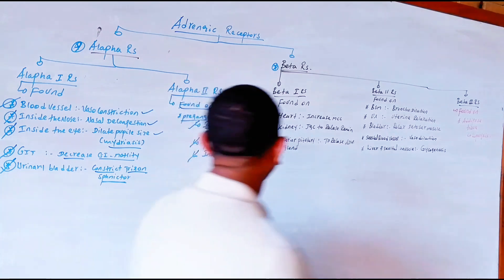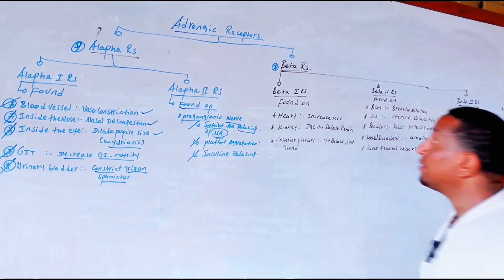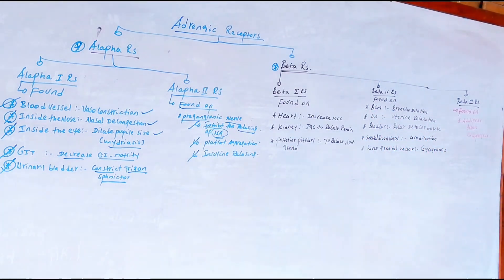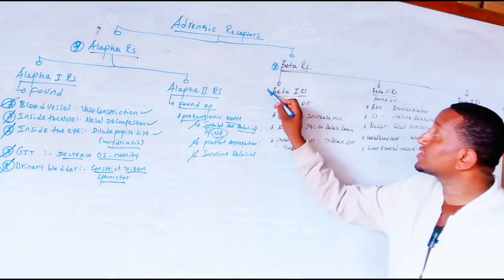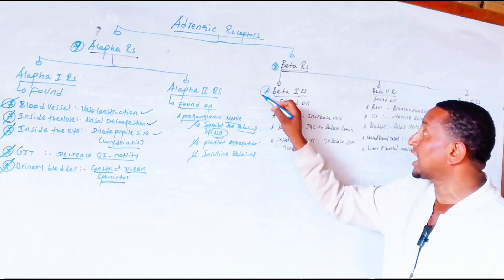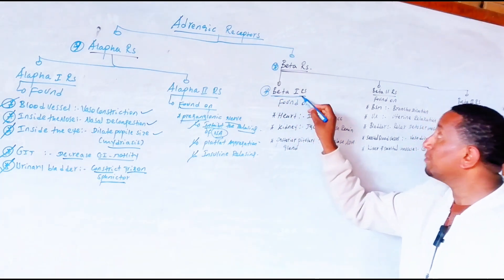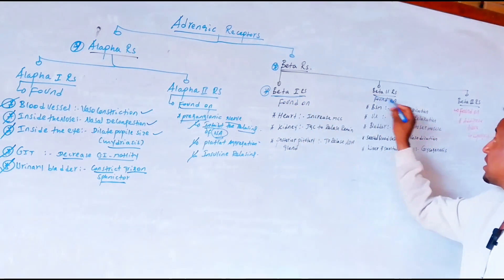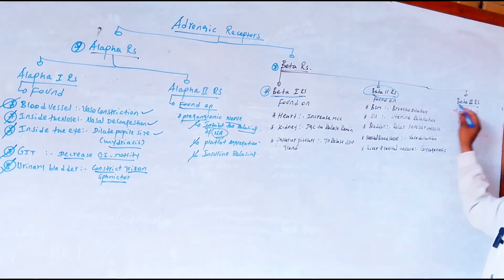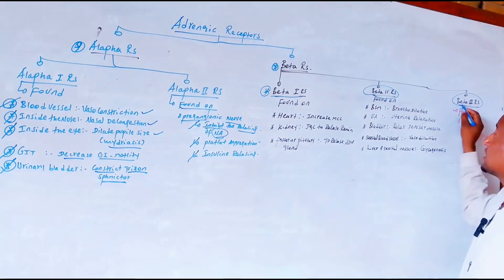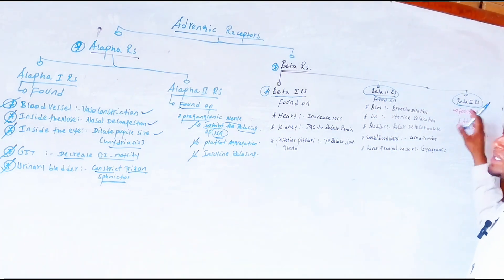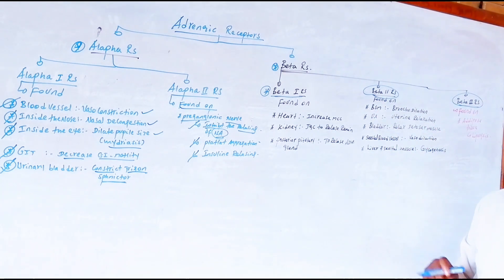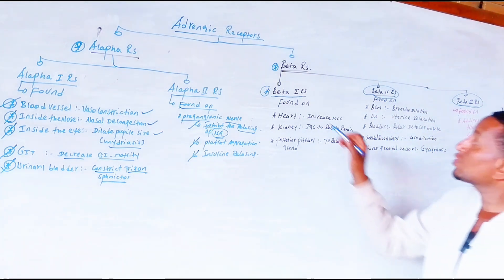Now for the Beta receptor. The Beta receptor has three types: Beta 1, Beta 2, and Beta 3. The most common are Beta 1 and Beta 2. Beta 3 is not in its active form and is less clinically relevant.